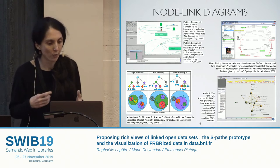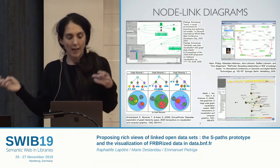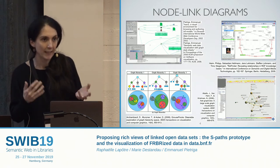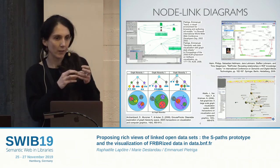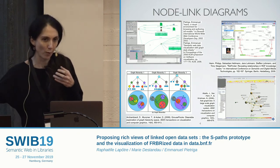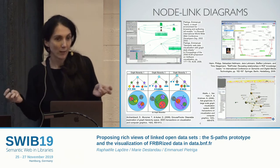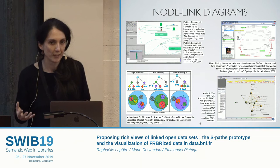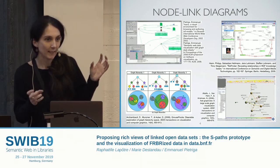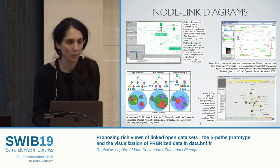Another usual approach, since linked data are graph data, is to use node-link diagrams. They have the advantage of representing RDF data very accurately and can display chains of triple statements, which solves the problem of having indirect information. But they do not scale well to large amounts of data — they quickly become unreadable — and they display all kinds of entities as nodes, making it difficult for the user to make sense of them.